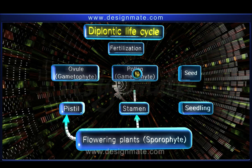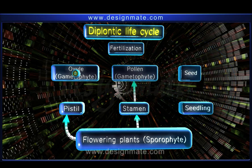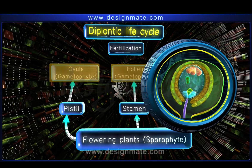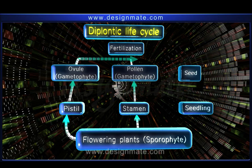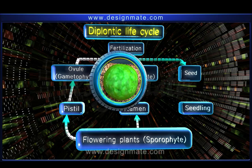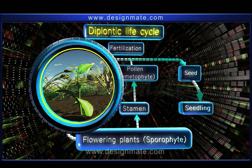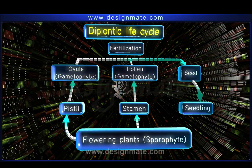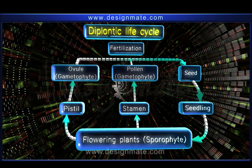These contain pollen and ovule, which are gametophytes. They combine together during fertilization and form the seed, which develops into a seedling. And this seedling grows into a flowering plant. This kind of life cycle is termed as a diplontic life cycle.